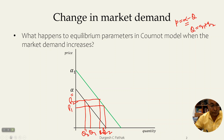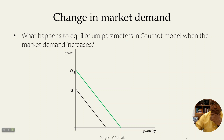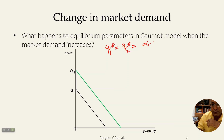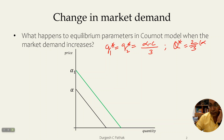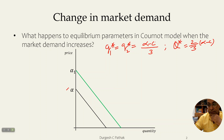Now let us look at the equilibrium parameters of the Cournot model. The equilibrium quantities produced by both firms were: Q1* equals Q2* equals (alpha minus C) divided by 3. The total quantity in the market at equilibrium was (2/3)(alpha minus C), where alpha is the intercept of the demand curve and C is the marginal cost of production, since we assumed there is no fixed cost.